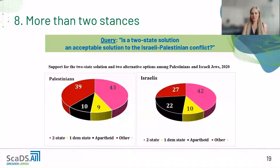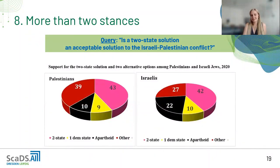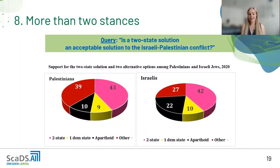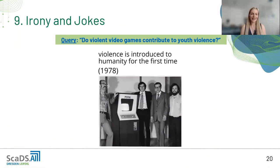Some discussions also have more than two possible stances and are simply more complex than just pro or con. For example, 'is a two-state solution an acceptable solution to the Israeli-Palestinian conflict' has at least four additional stance categories beyond yes or no, with one category labeled 'other,' suggesting even more possible opinions. Sometimes it is simply not possible to reduce the discussion to pro or con.